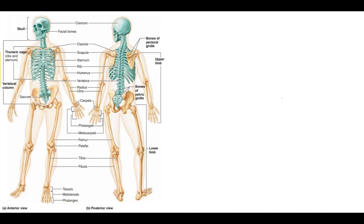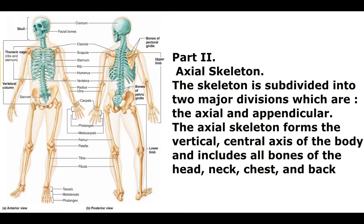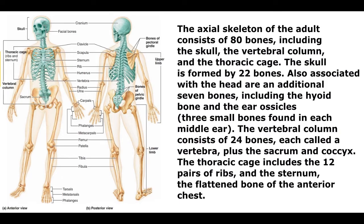Axial Skeleton. The skeleton is subdivided into two major divisions: the axial and appendicular. The axial skeleton forms the vertical central axis of the body and includes all bones of the head, neck, chest, and back. The axial skeleton of the adult consists of 80 bones, including the skull, the vertebral column, and the thoracic cage.